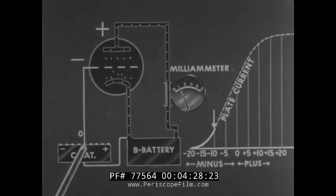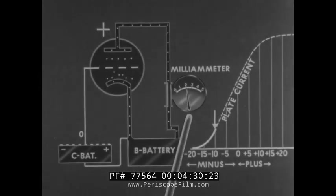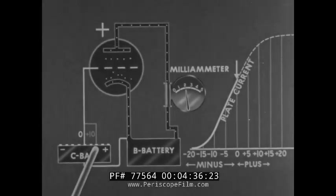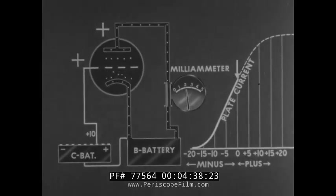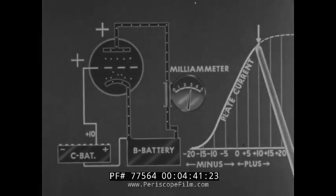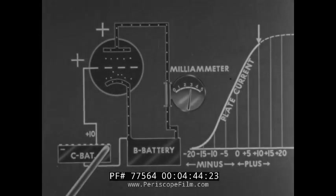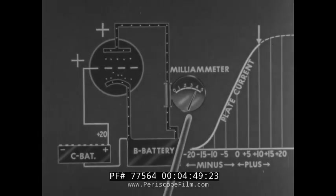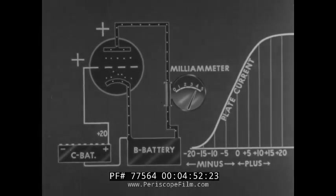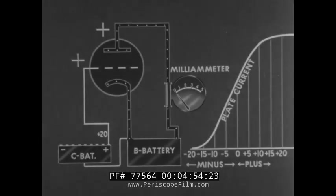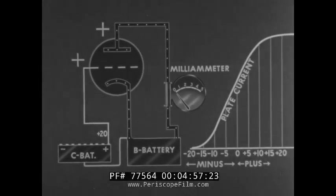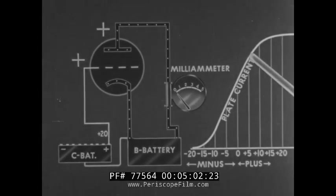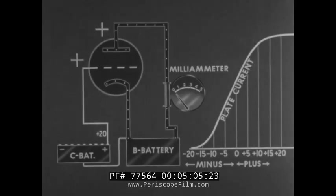If the grid bias is made still more positive, plate current increases and we move the arrow further up on the plate current curve. A still more positive grid results in still greater plate current. Another increase in positive grid voltage leads to the saturation of the tube. A narrow range of grid voltage is thus seen to control the entire output of the tube, extending from zero plate current to the tube's maximum output. This is why the grid is called the control grid.